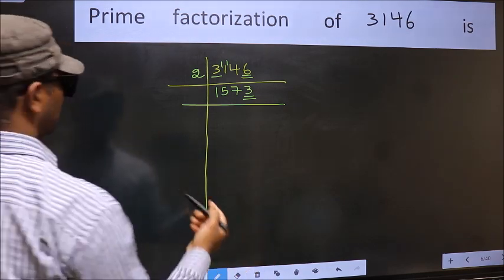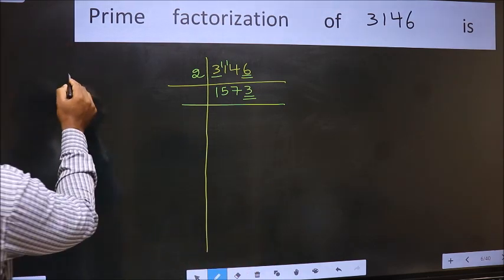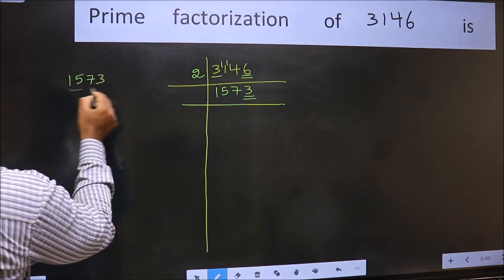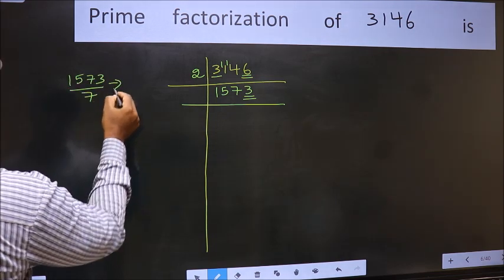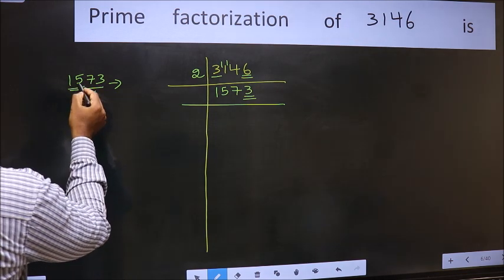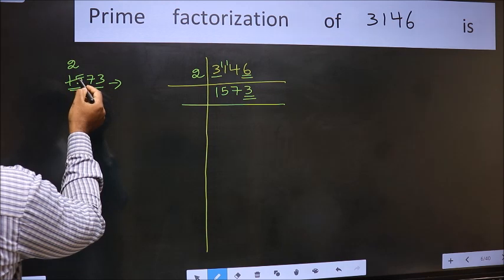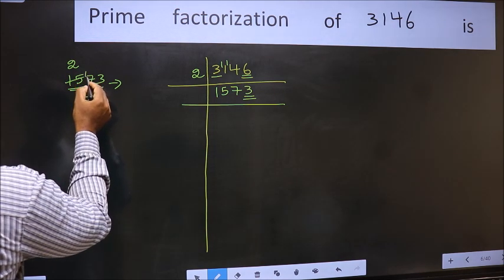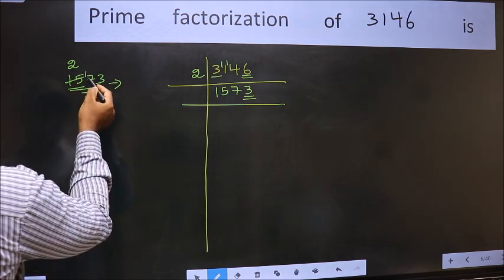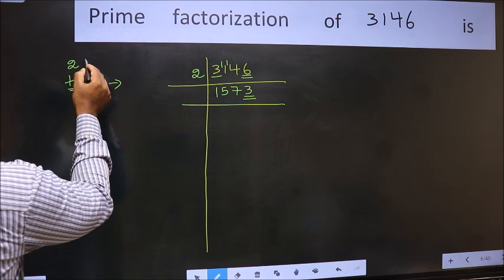Let us check divisibility by 7 here. 1, 5, 7, 3 by 7. Our number close to 15 in 7 table is 7, 2's 14. 15-14, 1, 1 carried forward 17. Our number close to 17 in 7 table is 7, 2's 14.